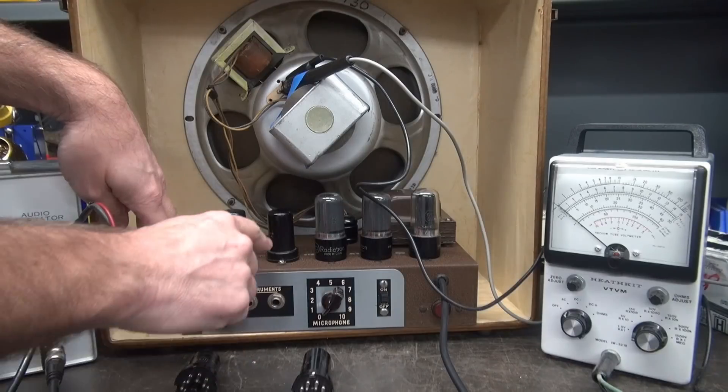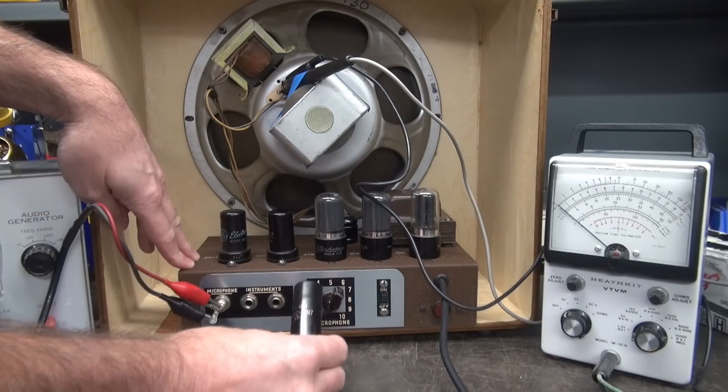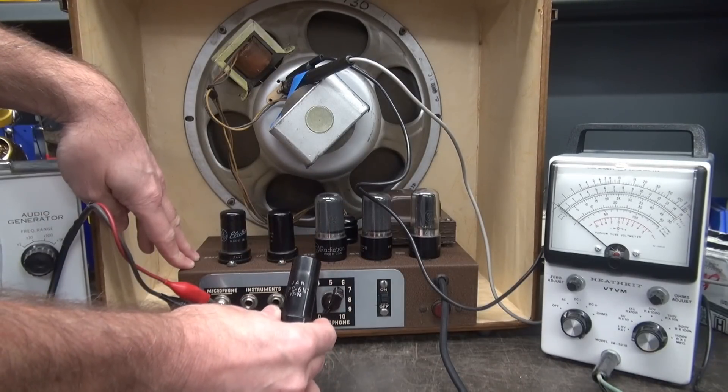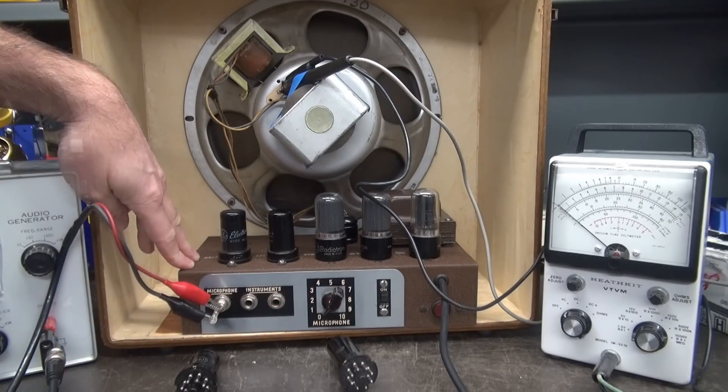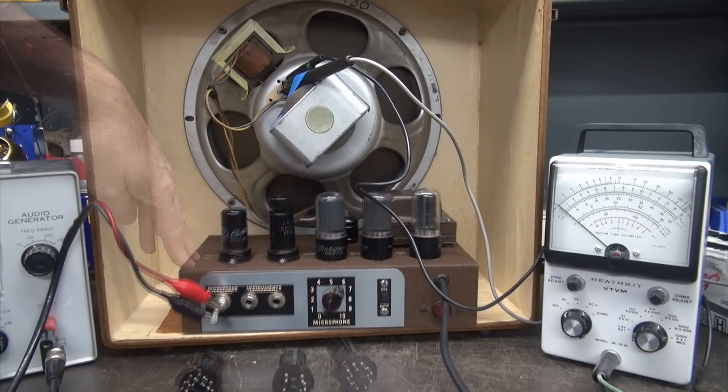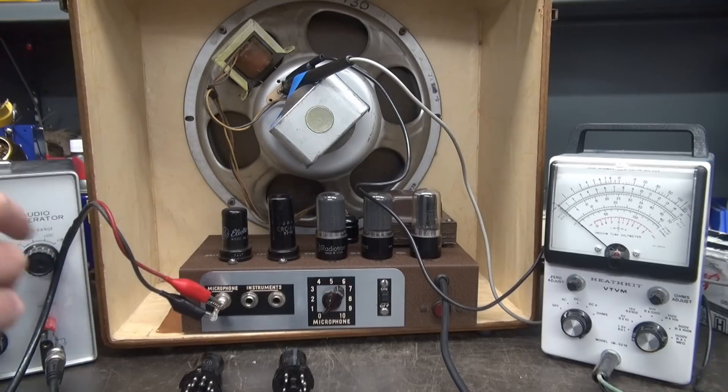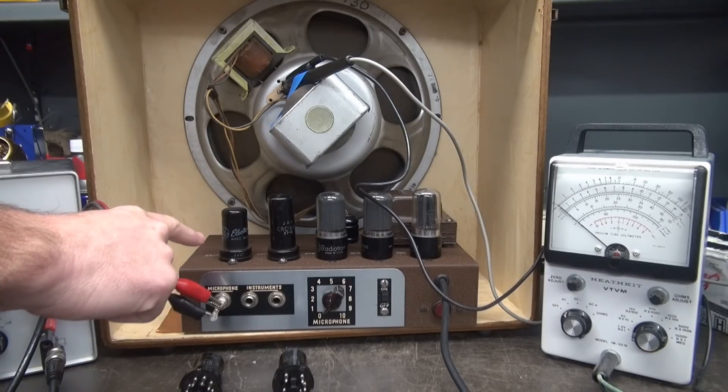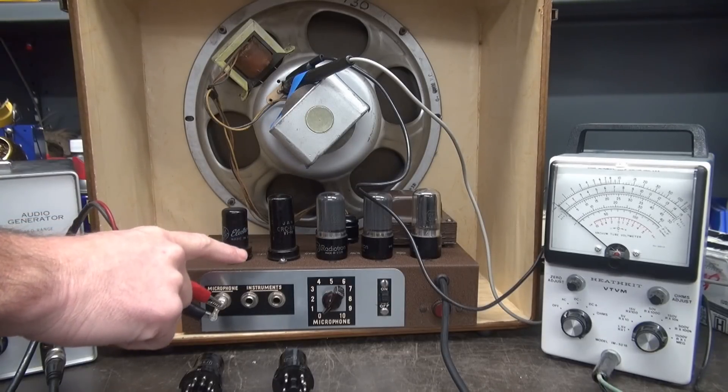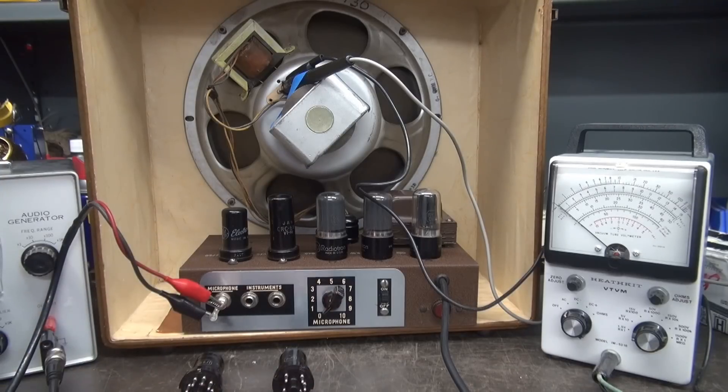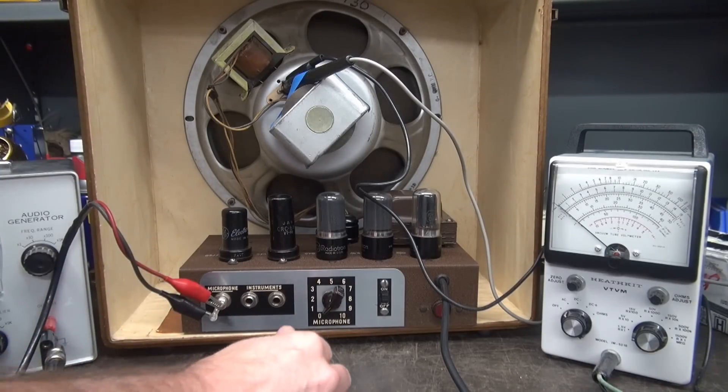So the next step is let's pull out the 6J5 and put in the 6N7 inverter and see if we pick up even more steam. Final configuration time guys. Now we have the 6AC7 and the 6N7 installed. The stock tubes have been removed. Let's check our gain.